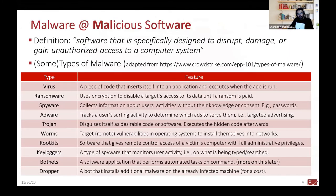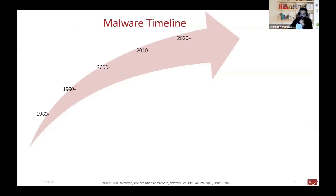Malware stands for malicious software. The definition is that it's a software specifically designed to disrupt, damage, or gain unauthorized access to a computer system. Examples of malware include virus, ransomware, spyware, adware, and so on. We don't call everything a virus — virus is just a subtype of malware. There are many types. We will look into a few of them.